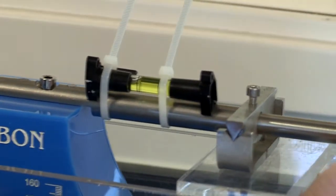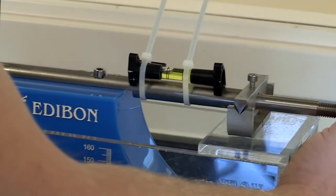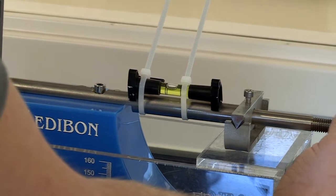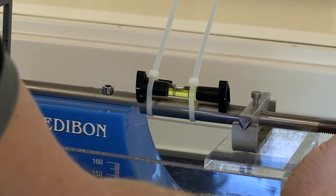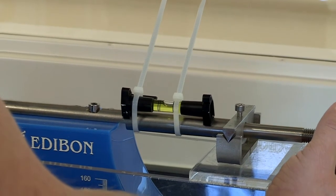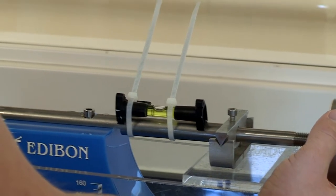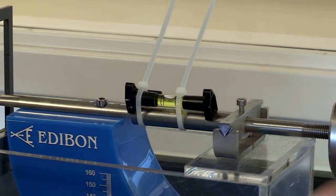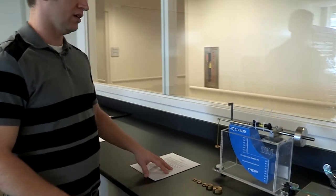So we're going to turn the weight so we get the bubble in the middle, and you want to get it as close as possible because the closer you get, the more accurate your readings are going to be.